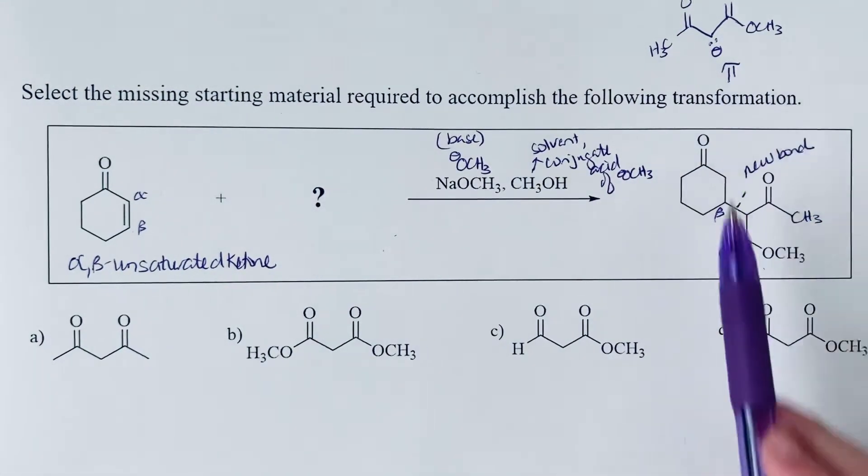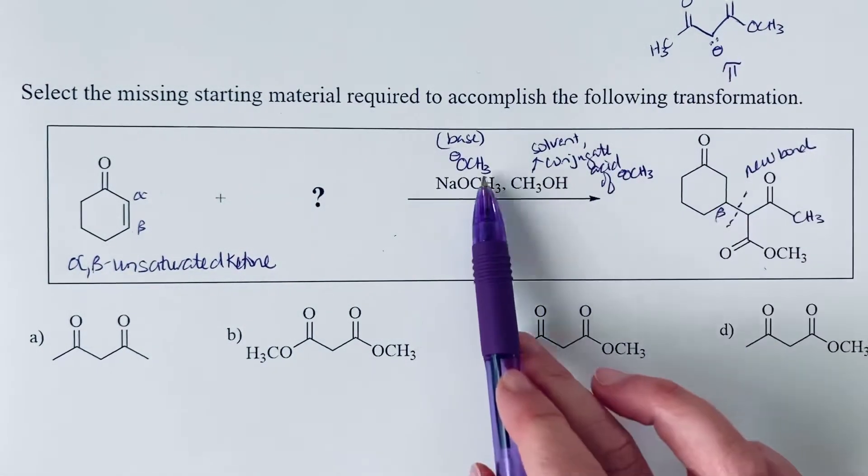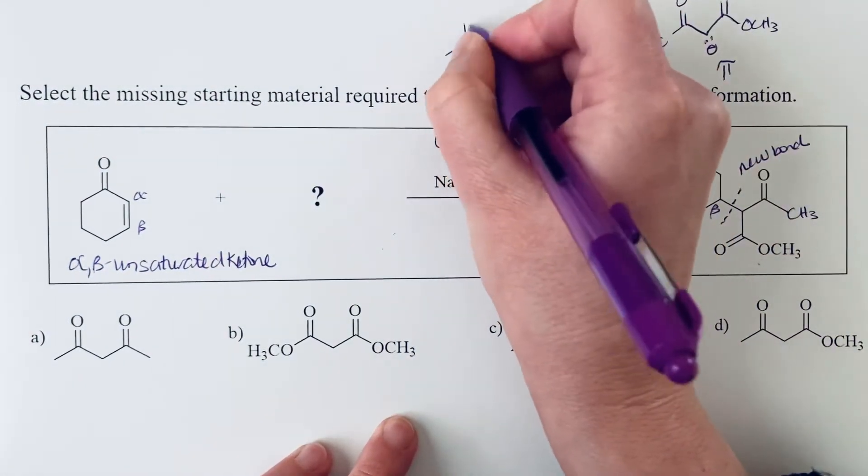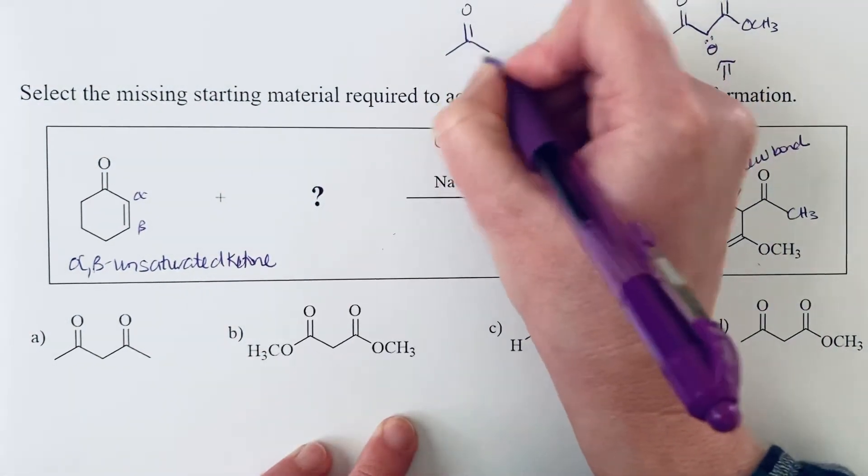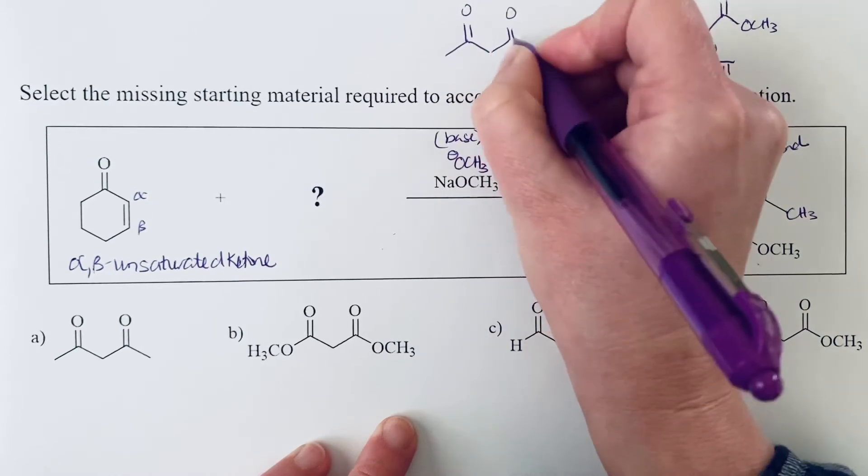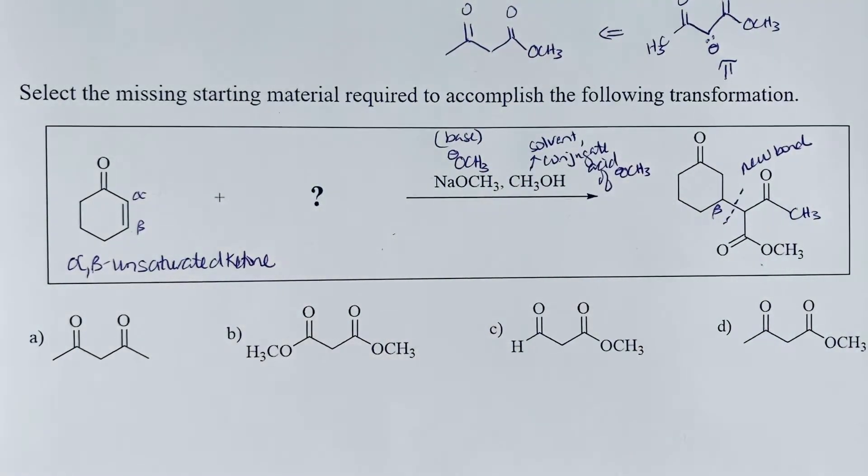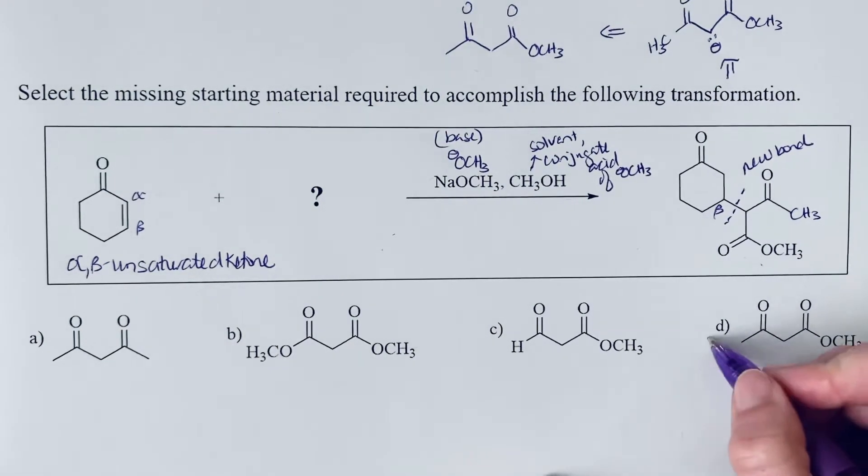And so this would form if you started with the neutral compound and treated it with the base. So this definitely would come from this neutral compound. So that is, if we take a quick look at the bottom here, that's our option D.